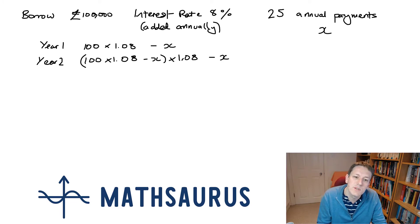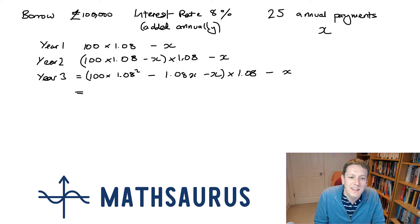And then we just keep doing this year after year. But let's simplify this a little bit as we go along. So I've got 100 times 1.08 squared minus 1.08x minus x. So at the end of year 3, we take this amount that we've just worked out, multiply it by 1.08 and then subtract x. So multiplying that out, we get 100 times 1.08 cubed minus 1.08 squared times x minus x.